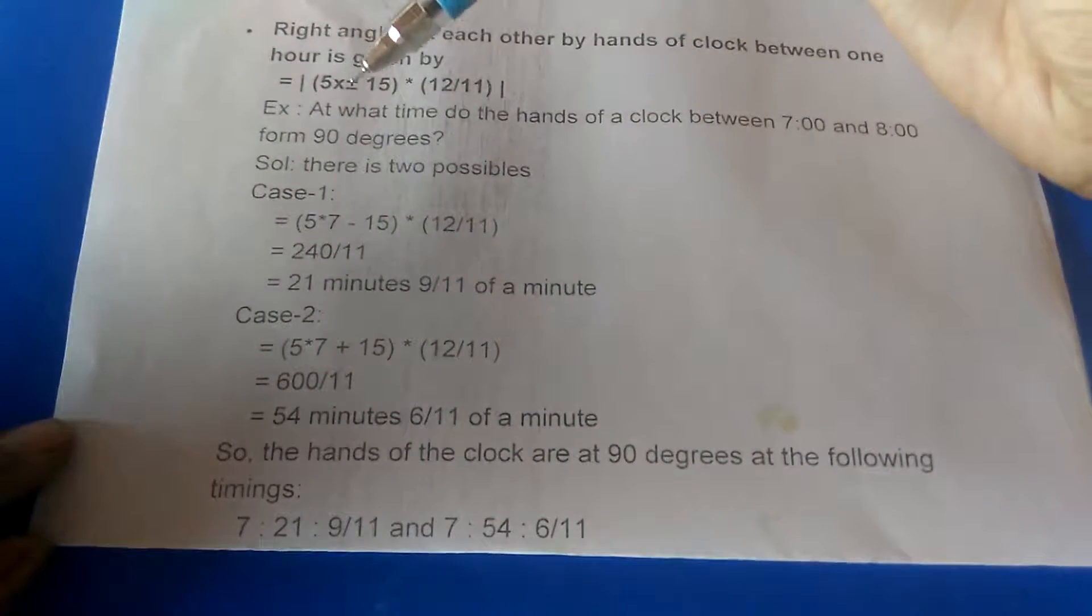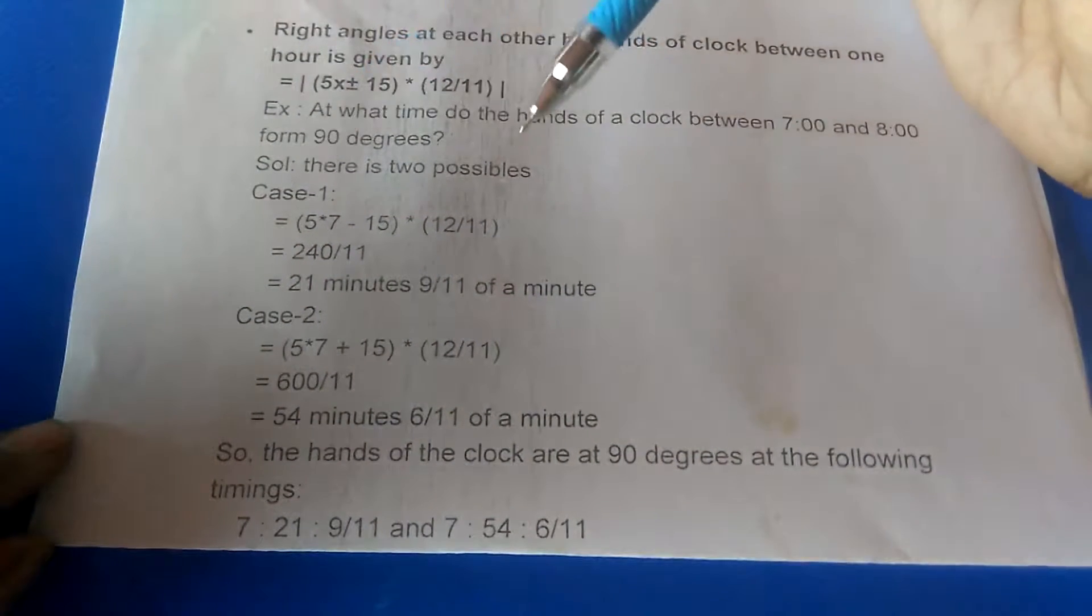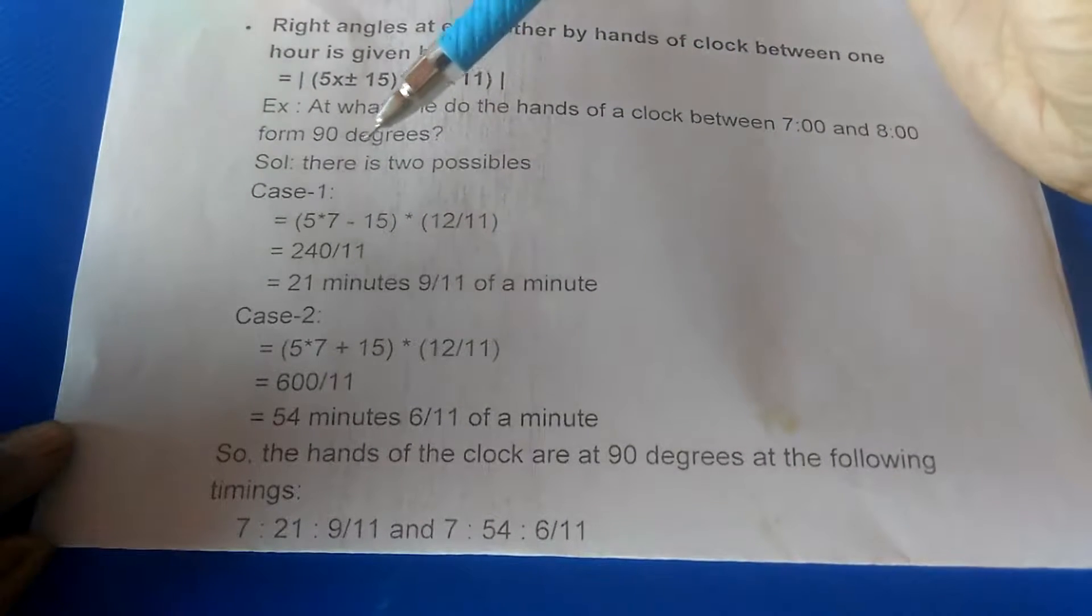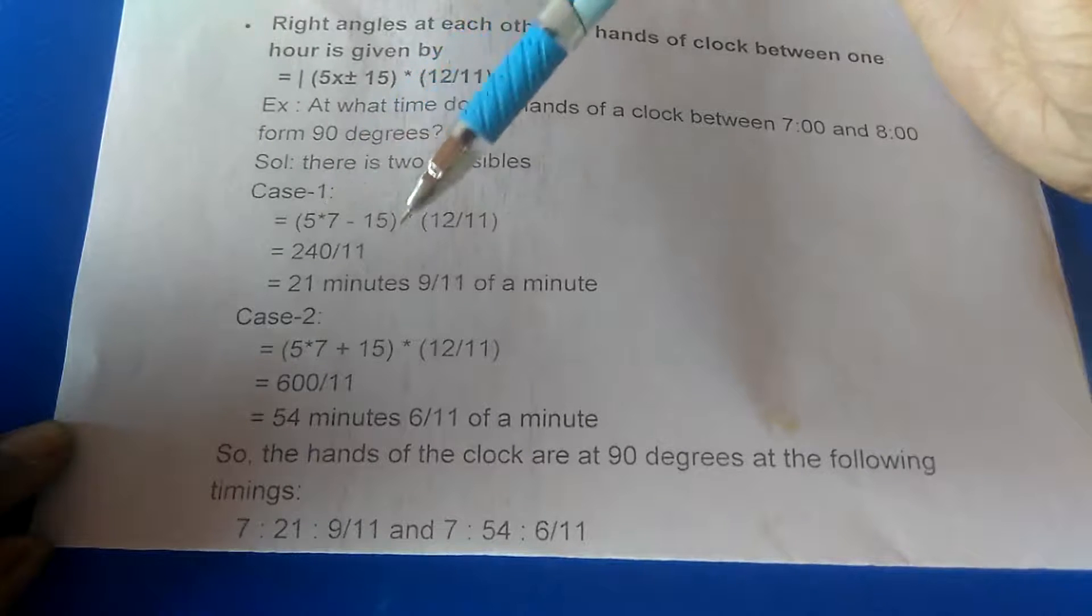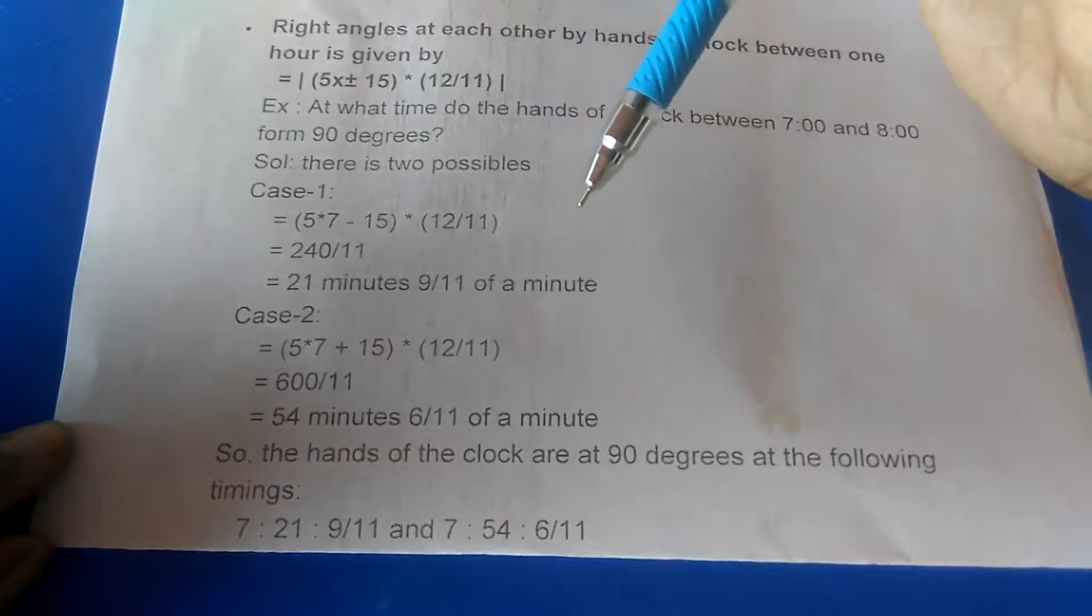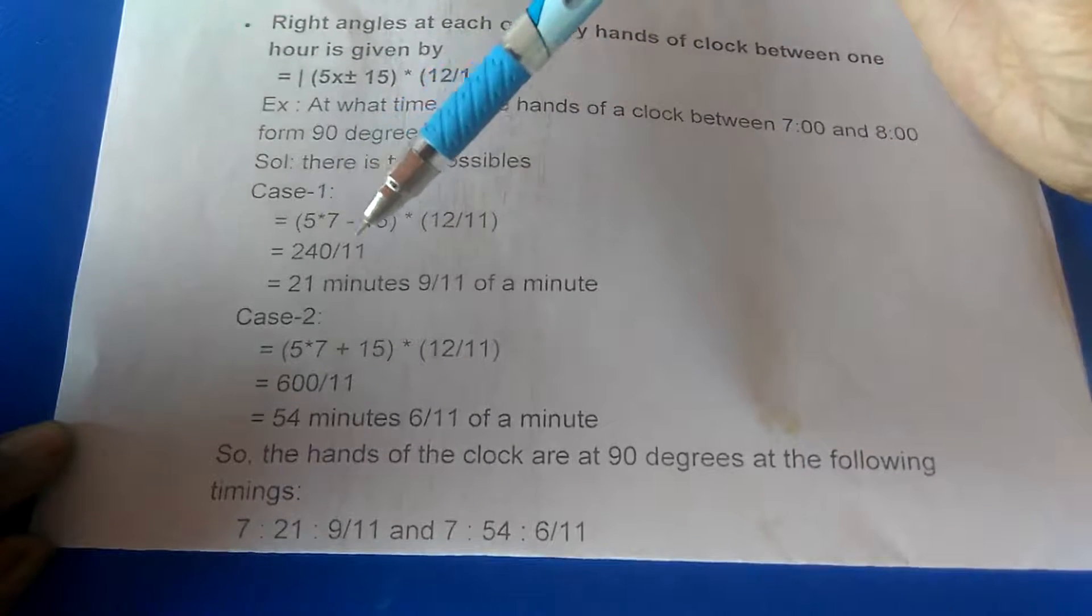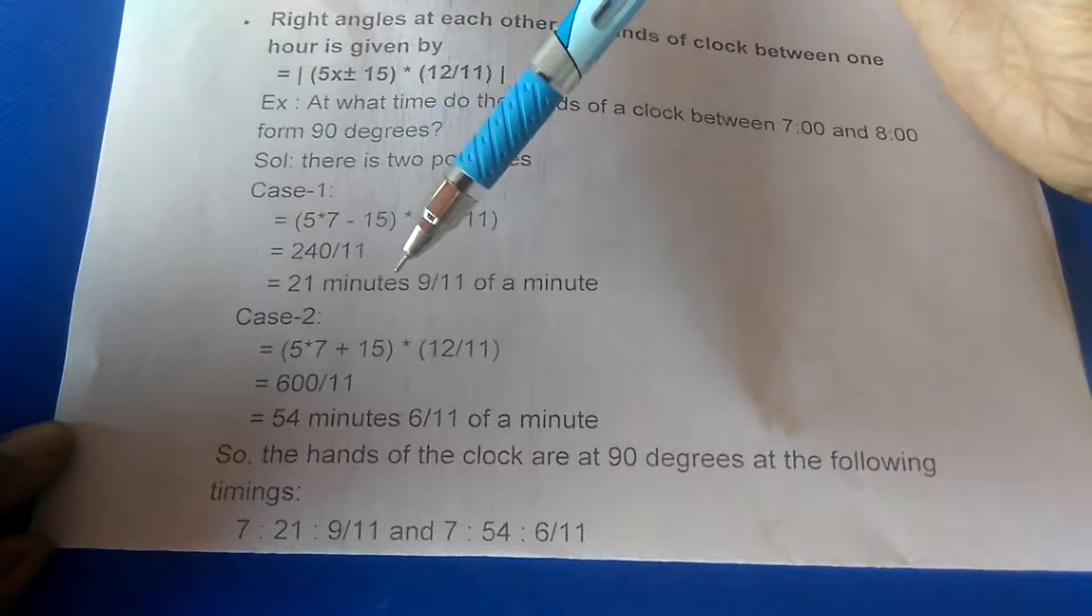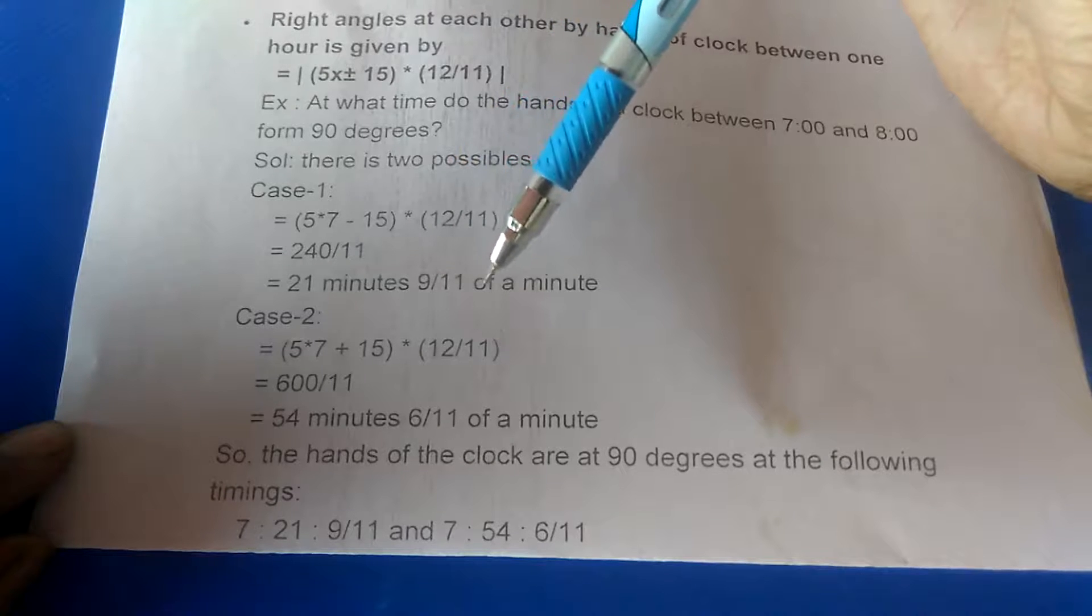Number 1: for 7 to 8, here x is 7. Now 5 times 7 minus 15 times 12 over 11 gives you 240 over 11. Solve it and you will get 21 minutes and 9 by 11 of a minute.